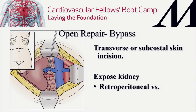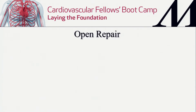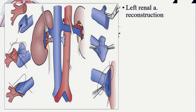You can approach retroperitoneally — on the right side this means going behind the vena cava, though right-sided retroperitoneal exposure isn't commonly performed — or transperitoneally. The classic technique is to do the renal artery bypass first: make an elliptical incision on the vein and artery, go end-to-end, then anastomose the vein to the aorta. The anastomosis should not be placed back at the original renal artery origin — placing it at a different spot on the aorta allows a beveled anastomosis and avoids re-stenosis.